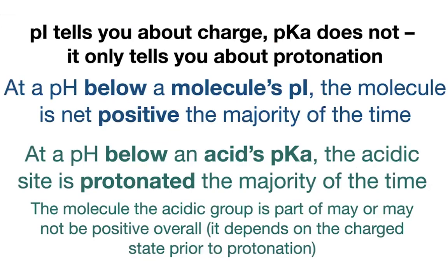The pI tells you about charge, but the pKa does not — it only tells you about protonation. It does not tell you about the charge of the molecule. Remember, a molecule can have multiple sites. Every time you add a proton, you're adding a positive charge, but if you were negative to begin with, you might still be negative, or you might be neutral. The pI is going to tell you about charge; the pKa is not. The pI comes from the pKa's of all the different acids involved in the molecule.